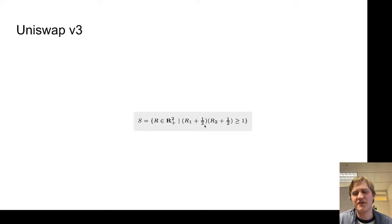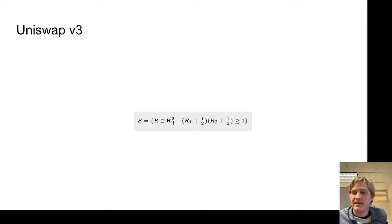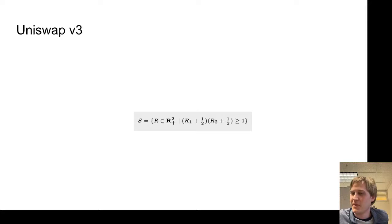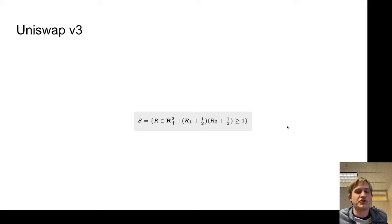The idea of Uniswap V3 is that instead of distributing liquidity throughout the entire price range, it's restricted to a specific range. There was some audio trouble here — after resolving it, we confirmed the screen capture audio was working correctly.